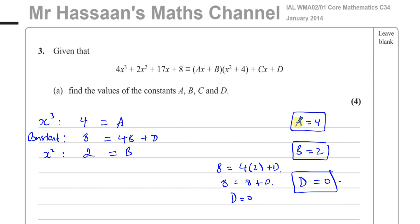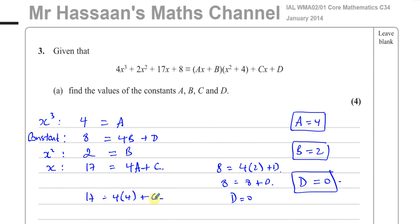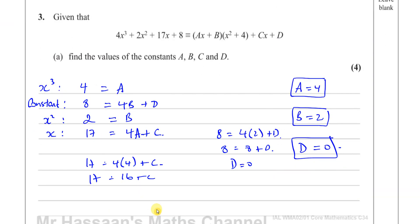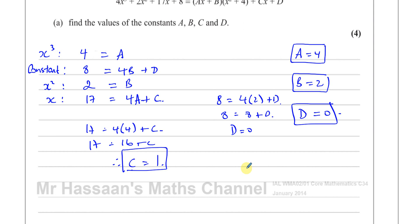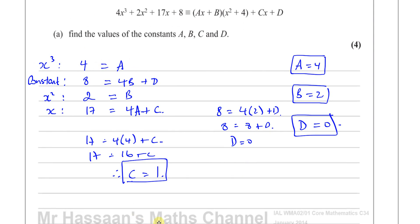Now we've got A, B, and D — we still need to find C. To find C, let's compare the x-terms. The x-coefficient on the left is 17. When you expand the bracket, you have Ax times 4, which is 4Ax, and you have plus C. So 4A + C equals 17. We already know A = 4, so 17 = 4 × 4 + C, which is 17 = 16 + C, therefore C = 1. So now we have all the values: A = 4, B = 2, C = 1, D = 0.